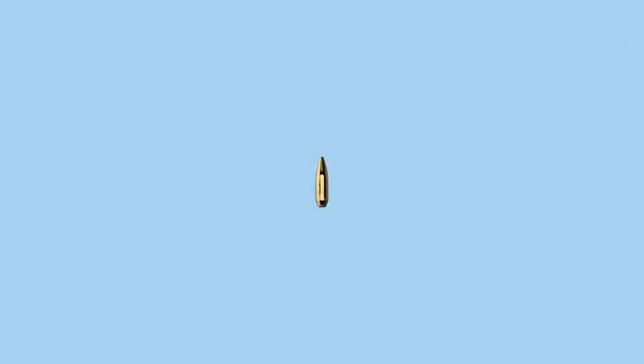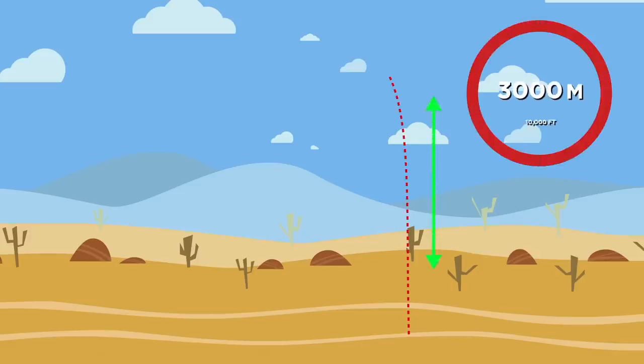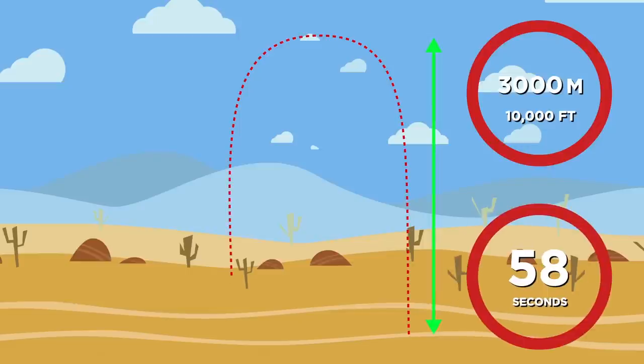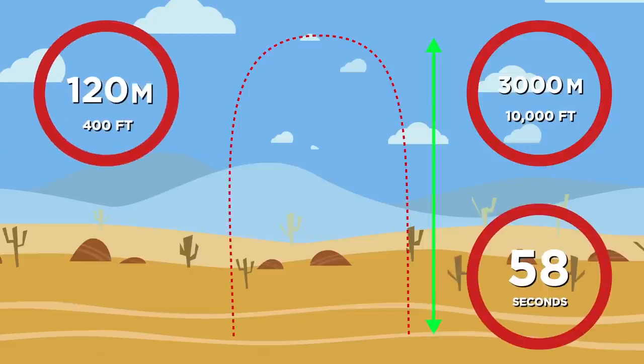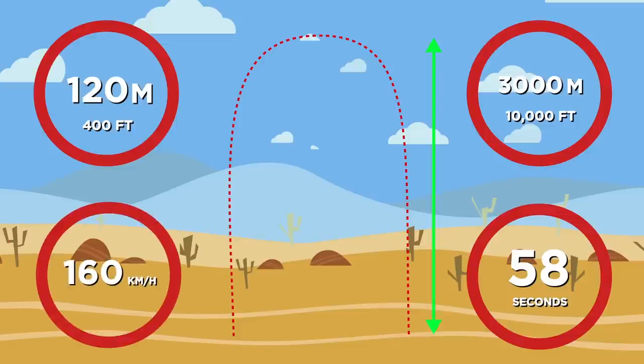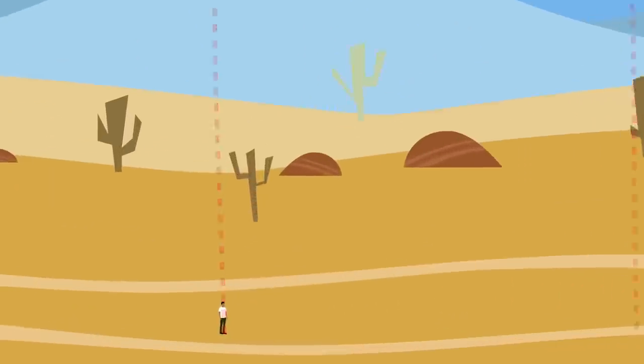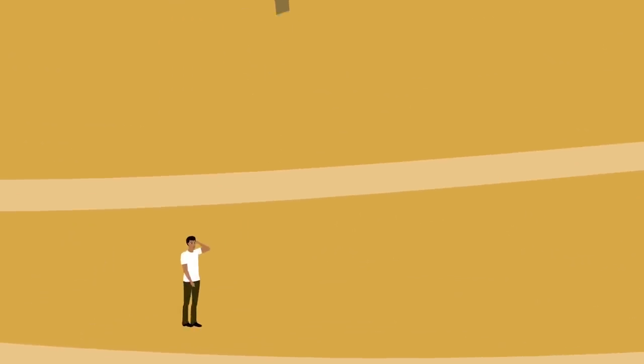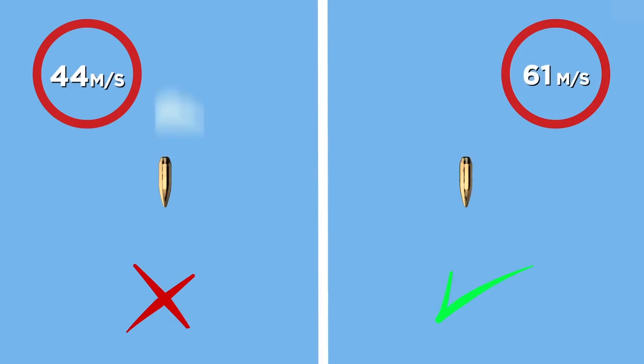According to computer simulations, a .30 caliber rifle bullet fired directly upwards reaches a maximum height of about 3,000 meters, or 10,000 feet, and takes approximately 58 seconds to make its round trip. It would reach a terminal velocity after falling about 120 meters, or 400 feet, as it reaches a speed of around 160 kilometers per hour, or about 44 meters per second. Surprisingly, that's not fast enough for it to penetrate human skin. It would need to travel at around 61 meters per second to do that.